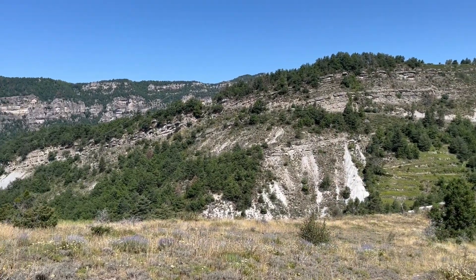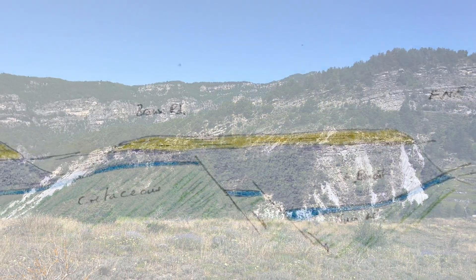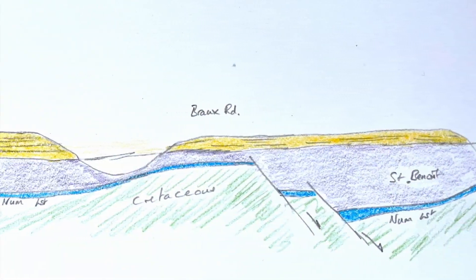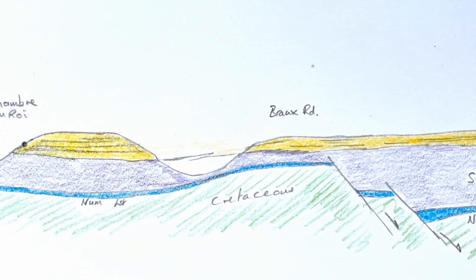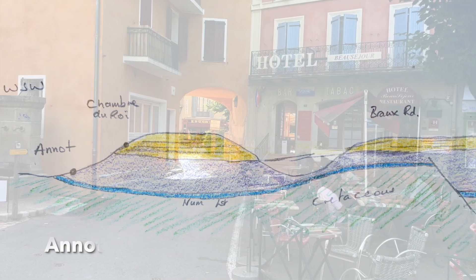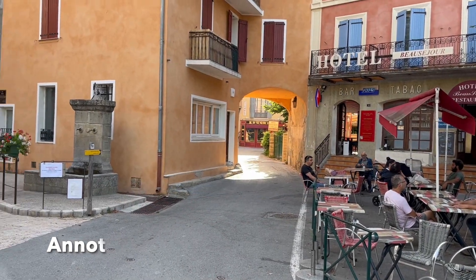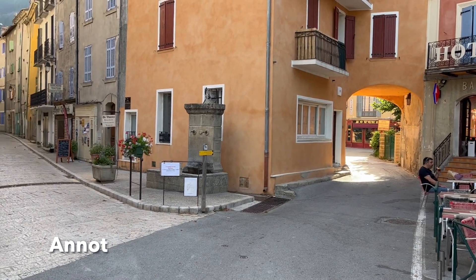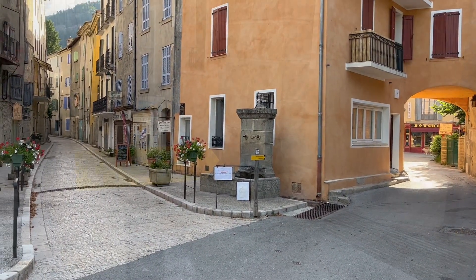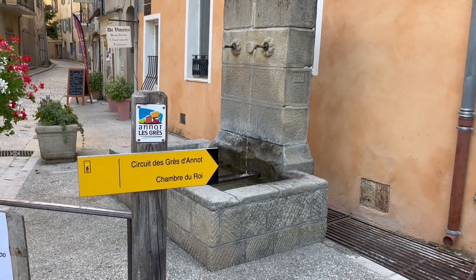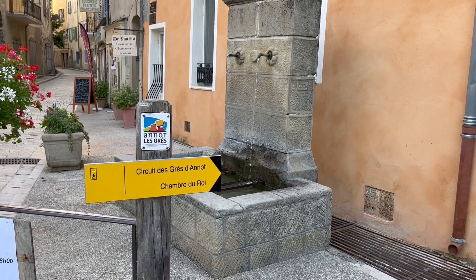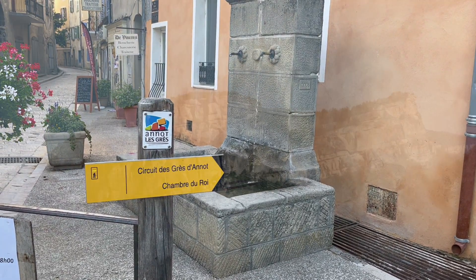So much then for these old slope deposits from the Bro Road section. Our next stop is across the valley. And the classic outcrops of Annot sandstone directly above the eponymous village. We're off to a famous site, the Chambre du Roi, the King's bedroom.